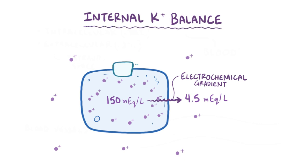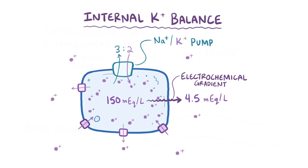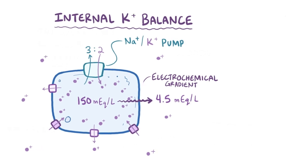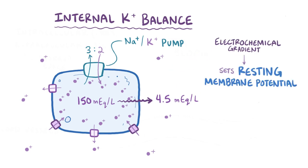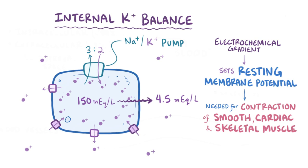This balance is maintained by the sodium-potassium pump, which pumps two potassium ions in for every three sodium ions out, as well as potassium leak channels and inward rectifier channels scattered throughout the membrane. This concentration gradient is extremely important for setting the resting membrane potential of excitable cell membranes, which is needed for normal contraction of smooth, cardiac, and skeletal muscles.